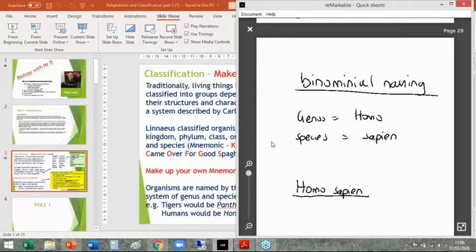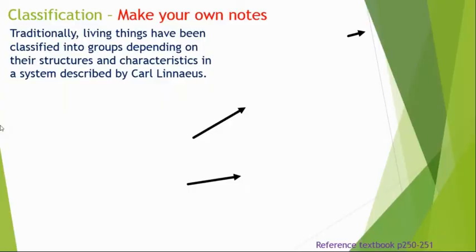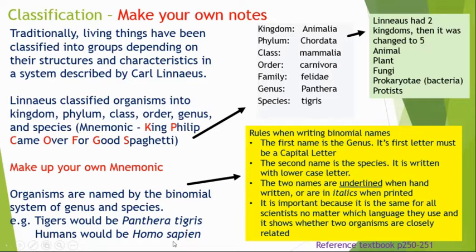Notice on my PowerPoint — because it's on a computer — Panthera tigris and Homo sapiens have been written in italics. That yellow box of rules: you do need to follow them.